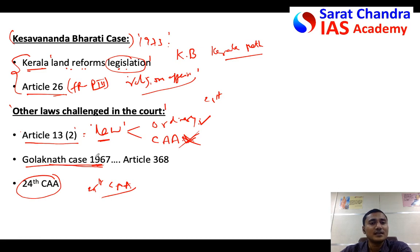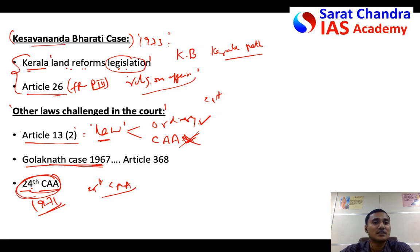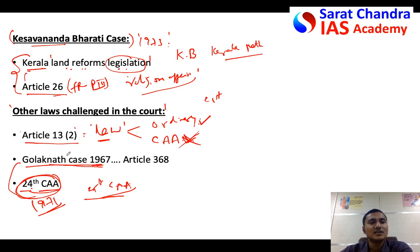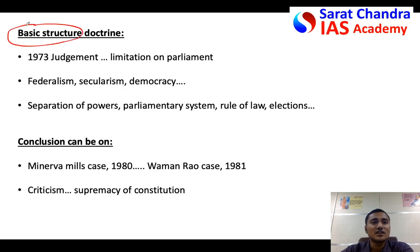Because of the Golaknath case, Parliament immediately made the 24th Constitutional Amendment Act in 1971, which gave Parliament complete powers to amend anything in the Constitution. The 25th Constitutional Amendment Act was also questioned under the Kesavananda Bharati case. As a response to all these acts, the Supreme Court gave its landmark judgment in 1973 in the Kesavananda Bharati case, stating that Parliament can amend anything in the Constitution without changing the basic structure.